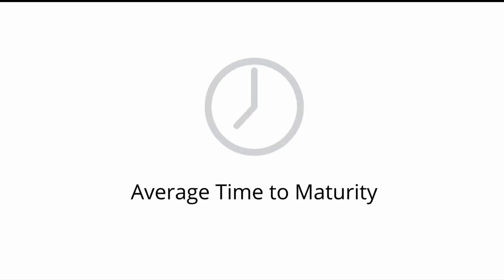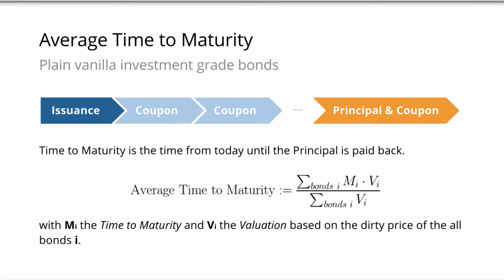The first thing we want to do is the time to maturity for bonds. This statistic is quite simple. Everybody probably knows what the time to maturity actually is — it's the time until the principal is basically paid back.